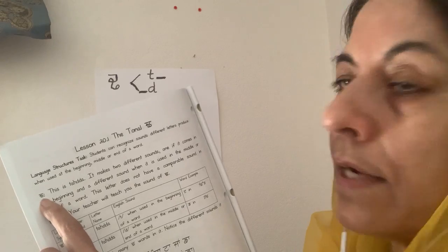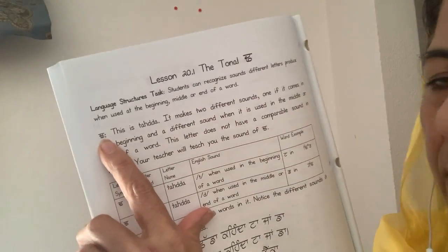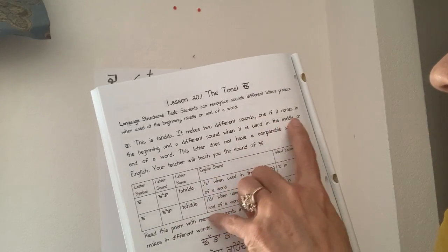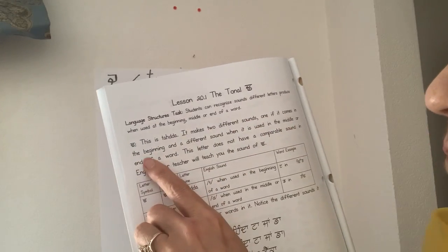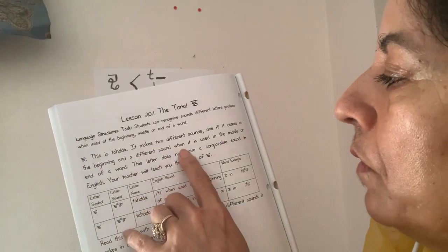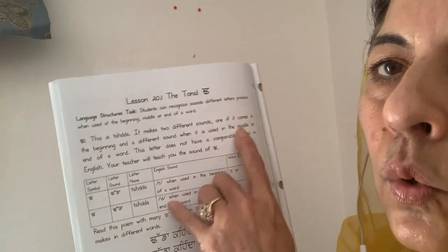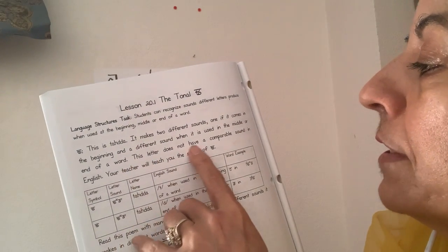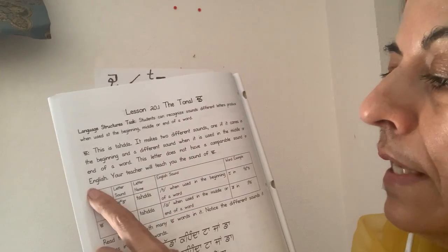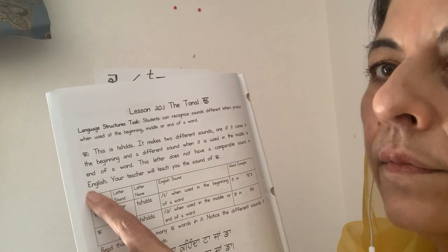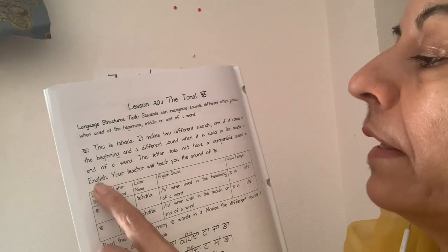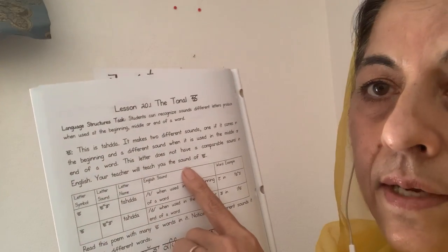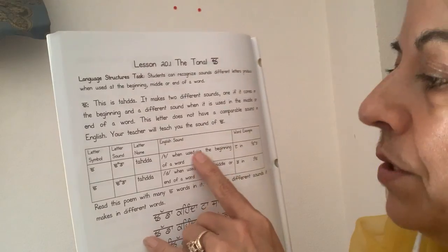So just like in Punjabi, you have to learn sounds of all the letters. Tadda — this is Tadda. Here you can see it. It makes two different sounds: one if it comes in the beginning, and a different sound when it's used in the middle or at the end of a word. This letter does not have a comparable sound in English. Your teacher will teach you the sound of Tadda, and I'm your teacher today and I will teach you the sound.